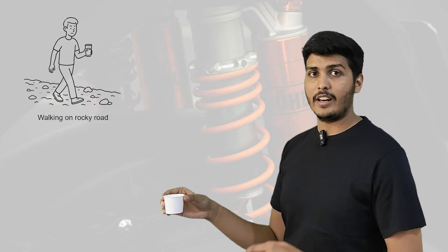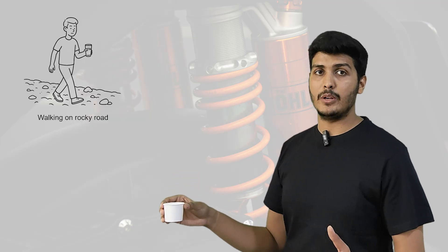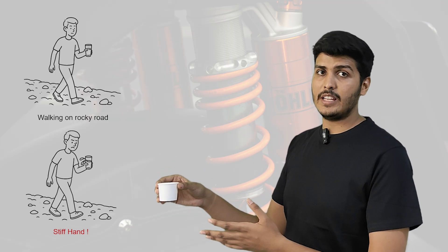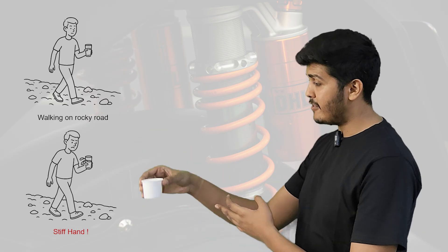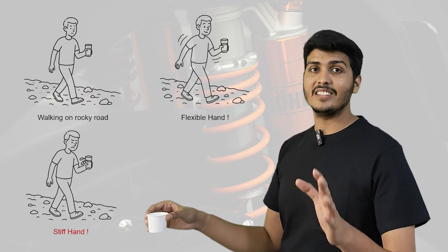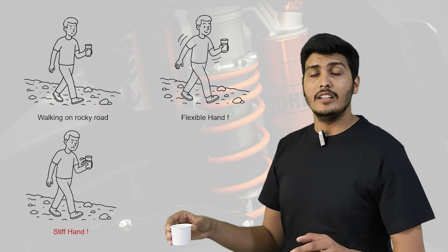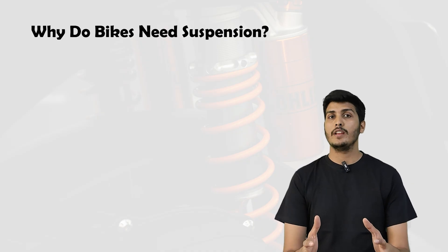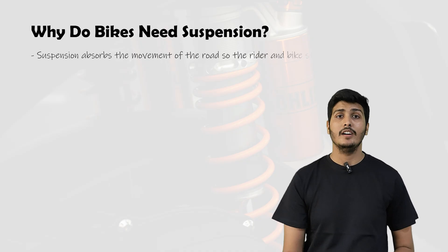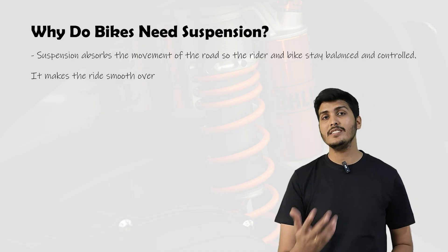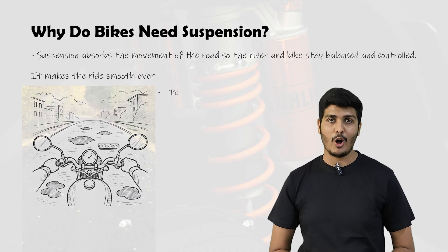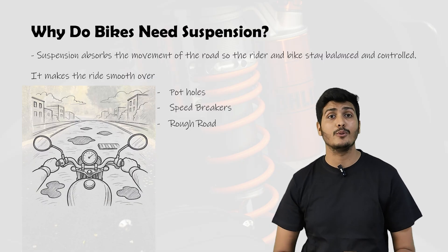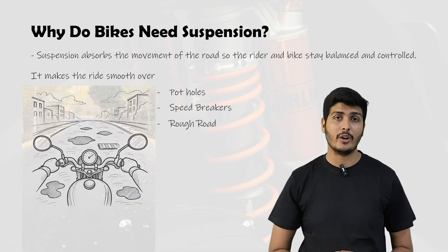Imagine you are carrying a glass of water and walking on a bumpy road. If your hands are stiff, the water will spill out with every bump. But if your hands are flexible and move with the road, the glass stays steady. That's what suspension does for your bike — it absorbs the movement of the road so that the rider and the bike stay balanced and controlled. It makes the ride smooth over potholes, speed breakers and rough roads, and helps the tire stay on the ground.